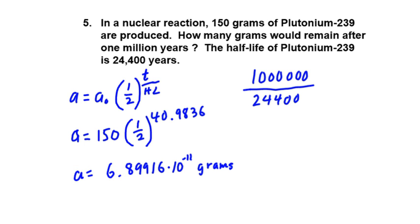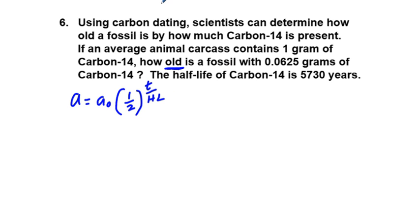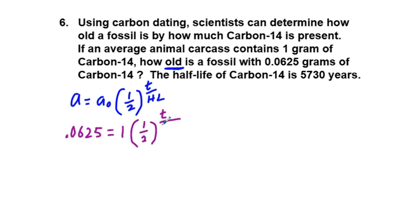Let's look at problem 6, because it is fundamentally different. We have the same equation: A equals A sub-zero times one-half to the power of time over half-life. But in this case, we have our half-life but we don't have the time — we're asked how old. The numbers give us: 0.0625 is our current amount, equal to our initial amount of 1 gram times one-half to the power of time over half-life of 5,730. The unknown is time t.